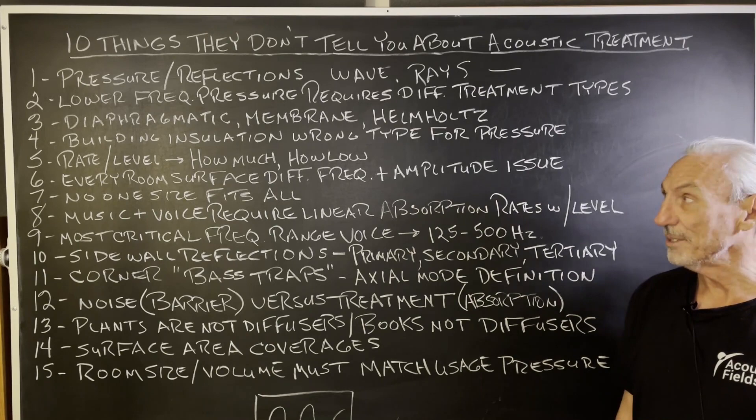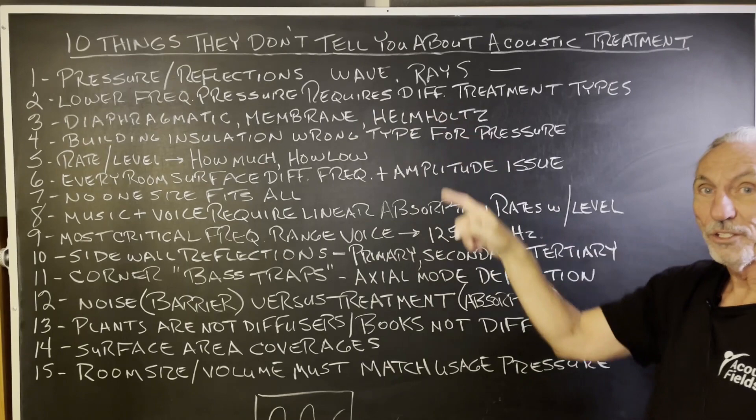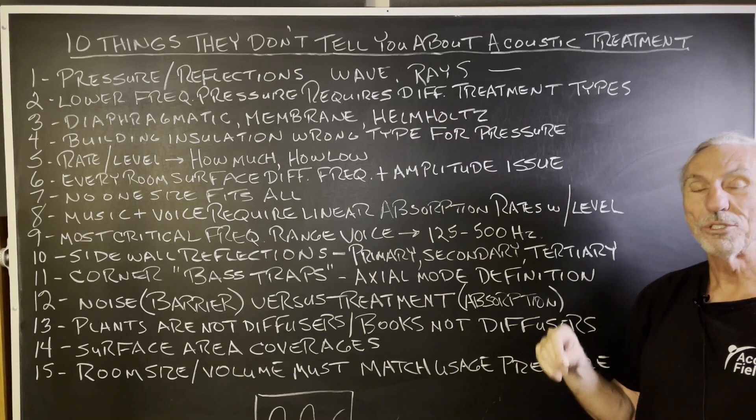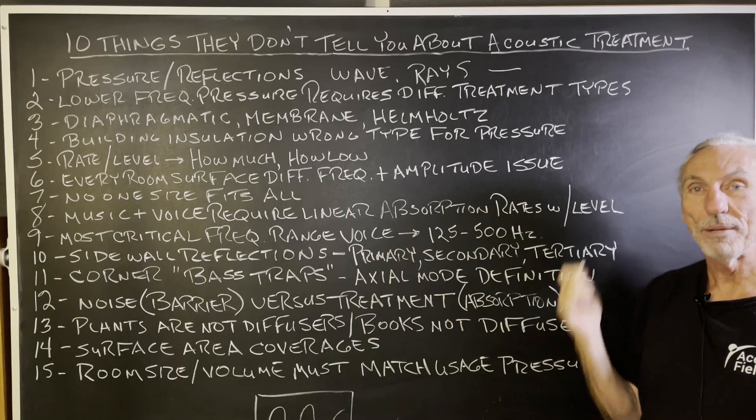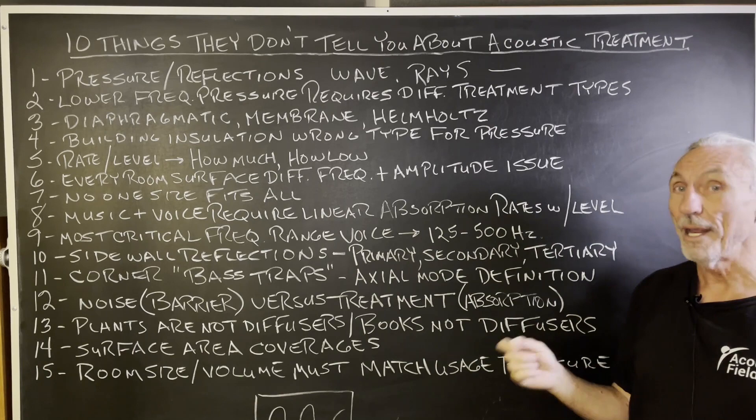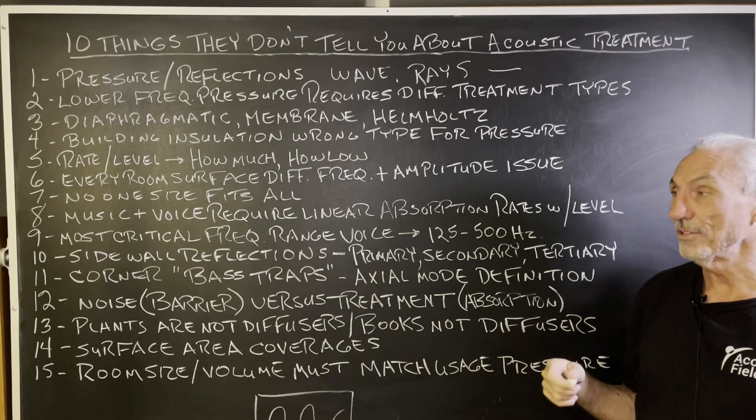Different treatment type for pressure versus reflection. You have to understand that because the physics of treating sound pressure versus sound reflection is completely different. Three types of lower frequency pressure treatment: diaphragmatic, membrane, and Helmholtz. Diaphragmatic is the one we subscribe to — it's the most powerful. It's also the most complicated to build, and it has the best performance. So everything goes hand in hand — there is no free ride.